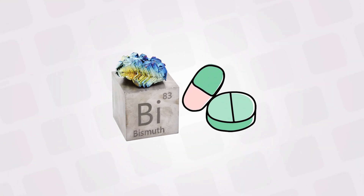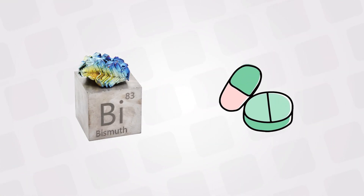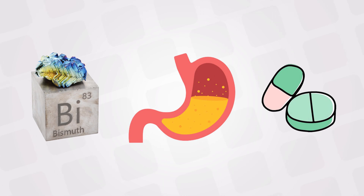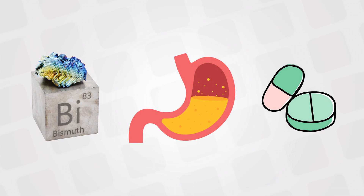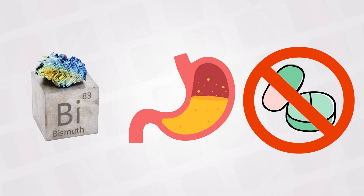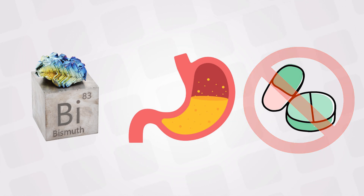Unlike bismuth, sucralfate requires an acidic environment, so the area around the ulcer has to be acidic. This means we cannot give sucralfate along with proton pump inhibitors like omeprazole, or antihistamines, or beta blockers.